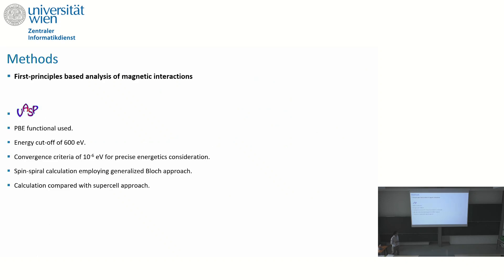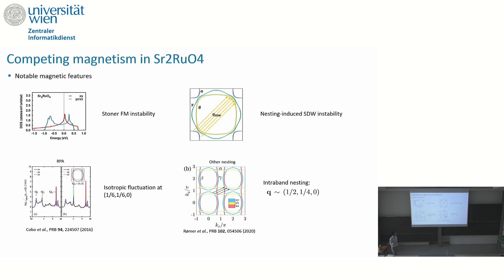We performed DFT total-energy calculations employing the generalized Bloch theorem to probe all different q-vectors of this system. To recap: there is a Stoner ferromagnetic instability, a nesting-induced spin-density-wave instability, other studies showing isotropic fluctuations very close to the gamma point, and a recent model study suggesting intraband nesting with q-vectors around (1/2, 1/4).